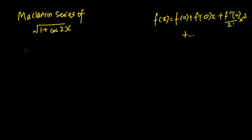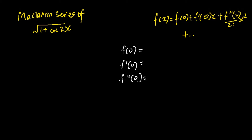The equations at the top right hand corner tell us that a function of x can be expressed as an infinite series, whereby f(0) represents the function evaluated at x equals 0, f'(0) is the function differentiated once and evaluated at x equals 0, and f''(0) is the function differentiated twice and evaluated at x equals 0. Today we are going to express this function as a Maclaurin series up to and including the x squared term.